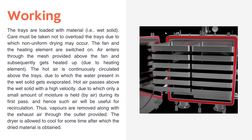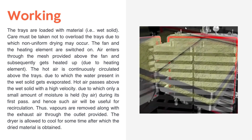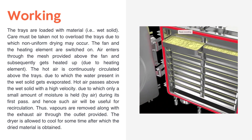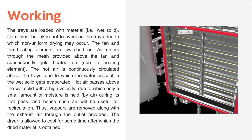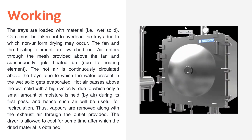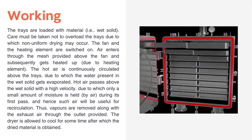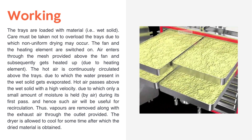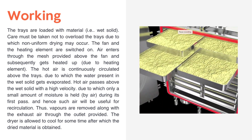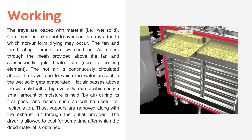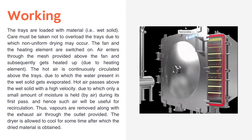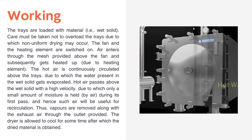Hot air with little moisture passes at high velocity over the solid in the first pass, so the air can be used for recirculation. The vapors are removed along with the exhaust air, and the dryer is allowed to cool before the dry material is taken out.